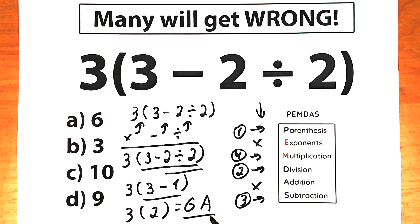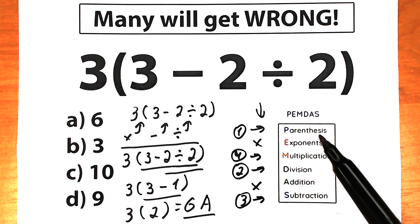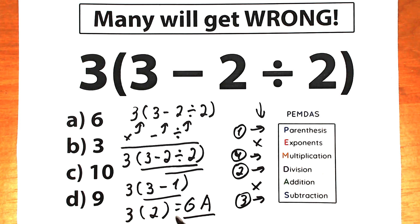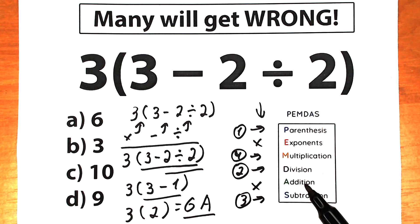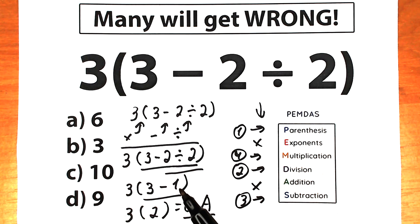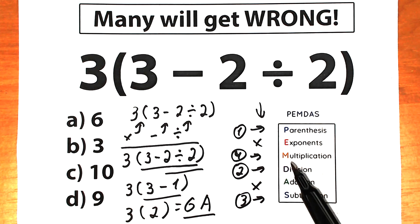This is the correct approach and correct solution, because we solved this challenge according to the PEMDAS order of operations. First we found our parentheses. Inside the parentheses we had two signs: a division sign and a subtraction sign. First we divided, because division has a higher position than subtraction and therefore higher priority. 2 divided by 2 equals 1. Next step was subtraction: 3 minus 1 equals 2. Our last step was multiplication: 3 times 2 equals 6. Option A — this is the correct answer.